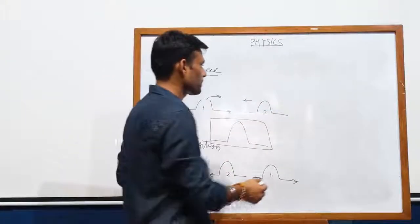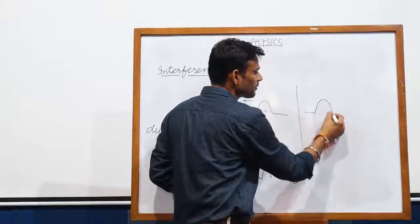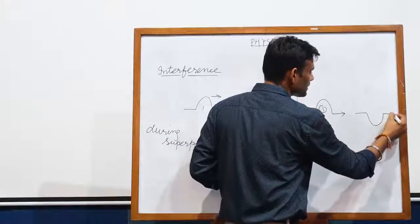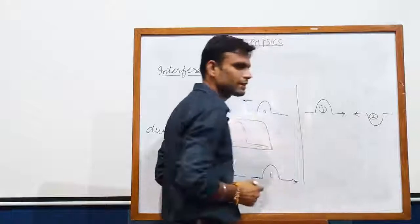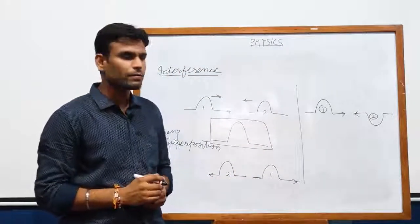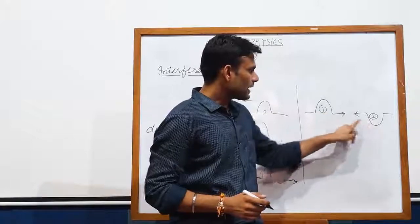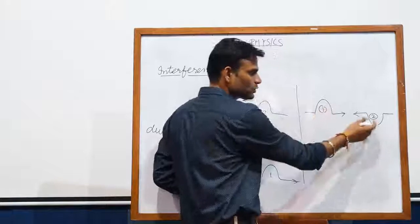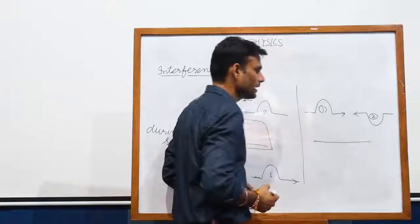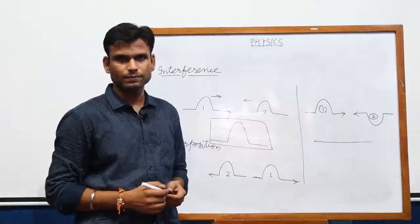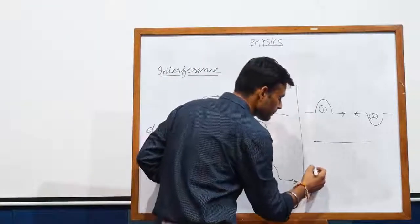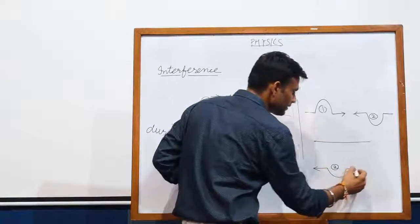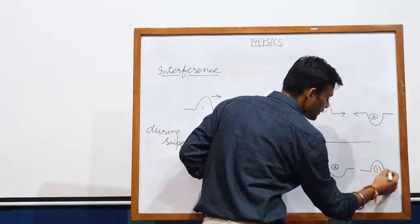Suppose one more example here. This is wave 1 propagating in the positive x direction and this is wave 2 propagating in the negative x direction. We can see that these two waves have different phases. So during superposition, if the amplitude of both waves are the same, there is no vibration — and after superposition, we get the first wave and the second wave propagating in their respective directions.